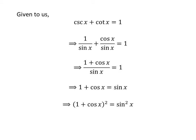Multiplying the whole equation by sin of x gives us 1 plus cos of x is equal to sin of x. Taking the square of both sides, we get the square of 1 plus cos of x is equal to the square of sin of x. Expanding the square of 1 plus cos of x, we get 1 plus cos squared of x plus 2 times cos of x is equal to sin squared of x.